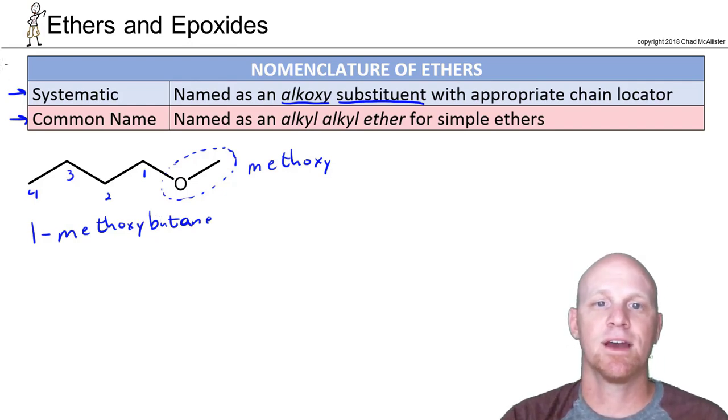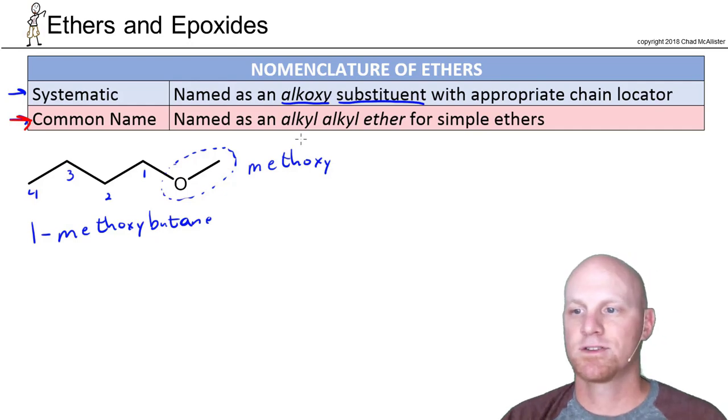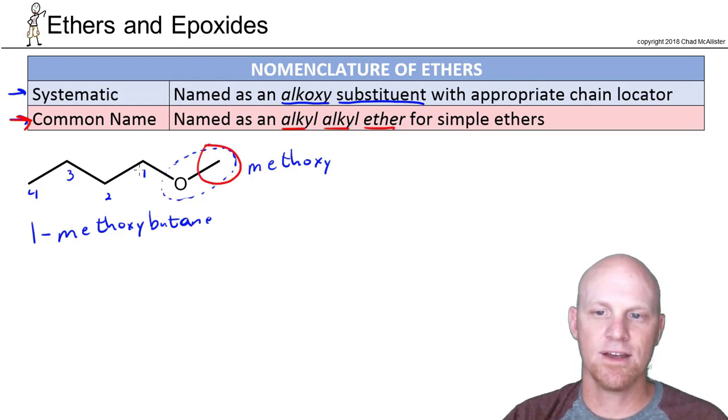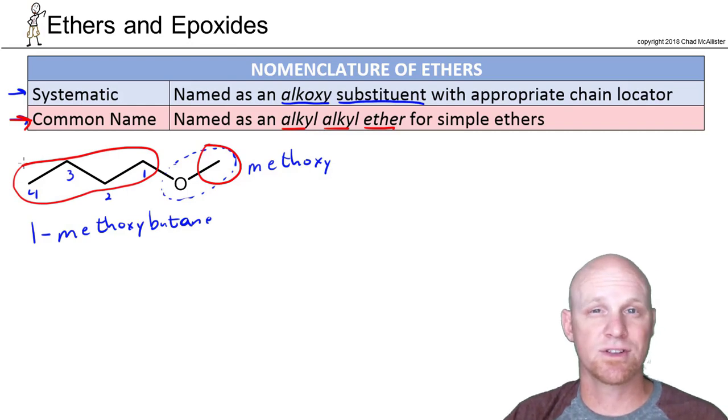If we take a look at the common name here as well. So here you're going to name it as an alkyl alkyl ether. It's three words. And essentially you're just taking the carbon chains that are on either side of the oxygen. Now it turns out this only works for simple ethers as long as you have a simple carbon chain on both sides. If you've got fairly complex ones we would never do this.